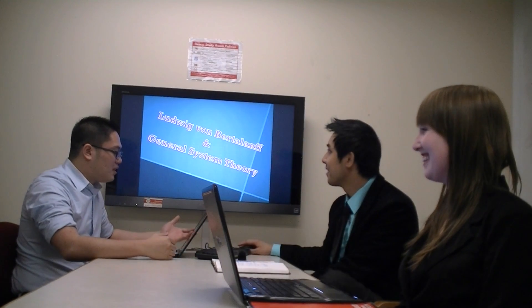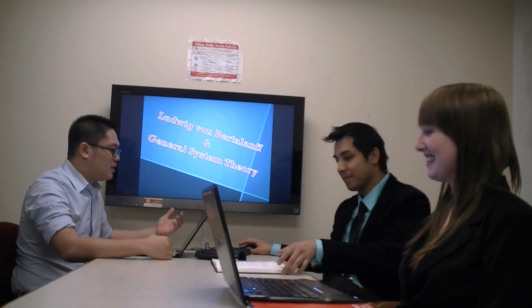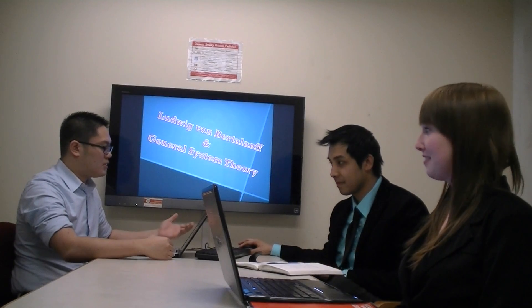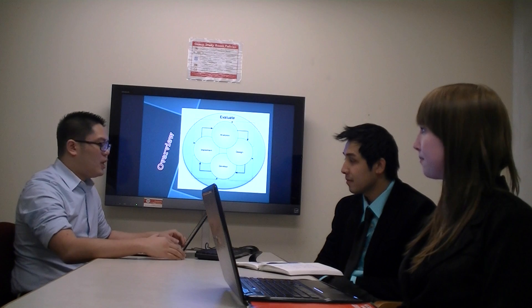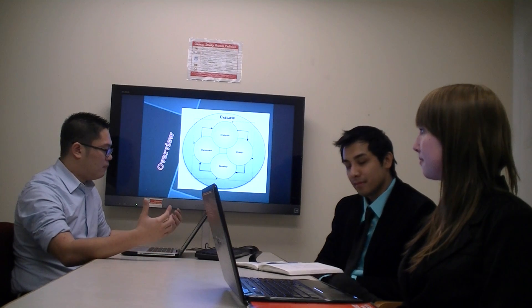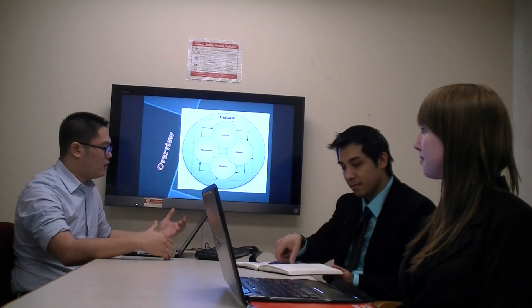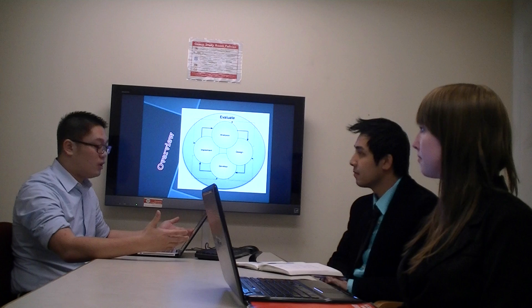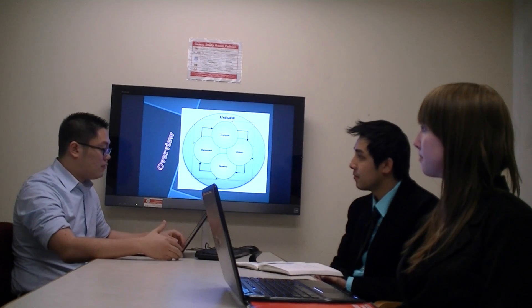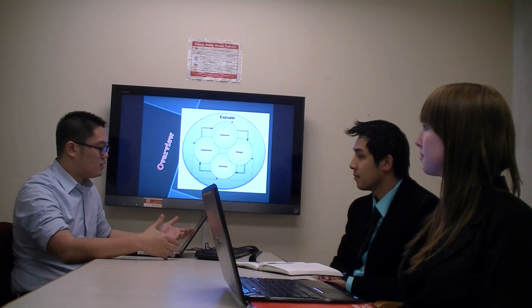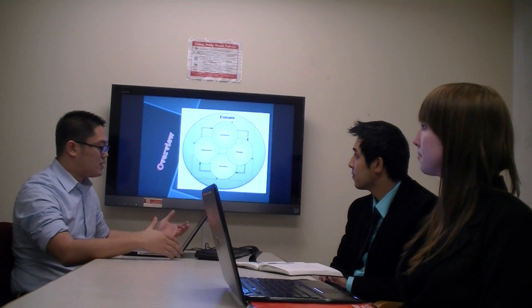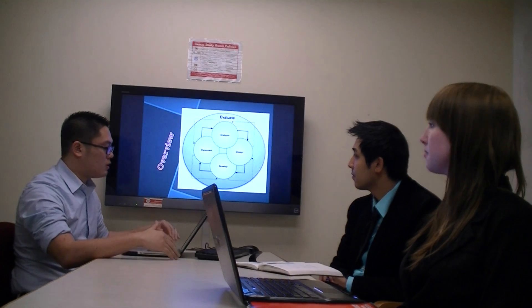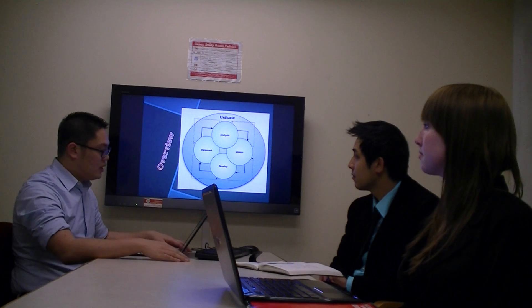Carl Ludwig did some amazing things. General Systems Theory, in a nutshell, is about the approach to understanding complex issues and problems in general. It focuses more on structure rather than function when solving things. For example, making a program — instead of knowing how it's going to run, General Systems Theory focuses on the structure and the thought process and how everything should be organized before it runs. System analysis is a perfect example of that.